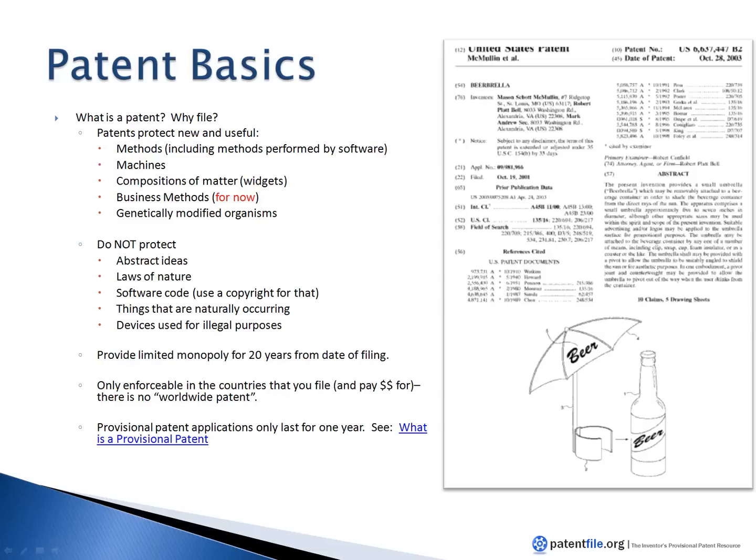Once you get your issued patent, it gives you a limited monopoly for 20 years from the date you filed your patent. Patents are only enforceable in countries that you file and pay money in. So if you want coverage in Canada, Brazil, Europe, Japan, or almost any country, you would have to file a patent application in each of those countries, as each has their own patent office.